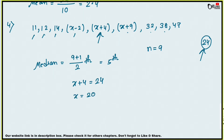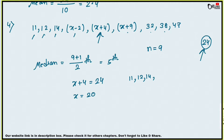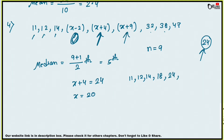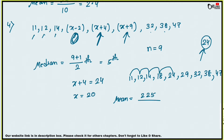Now substitute x = 20 into the observations: 11, 12, 14, x−2 = 18, x+4 = 24, x+9 = 29, 32, 38, 47. Now find the mean: 11 + 12 + 14 + 18 + 24 + 29 + 32 + 38 + 47 = 225. So mean = 225 / 9 = 25. That is your answer.